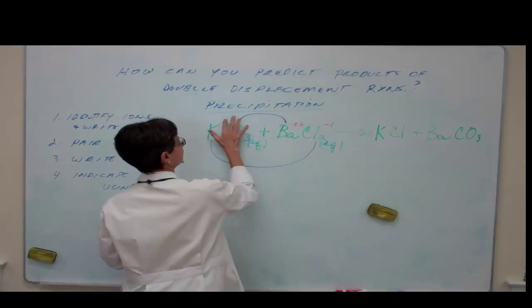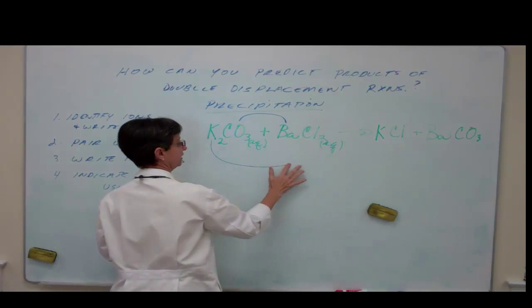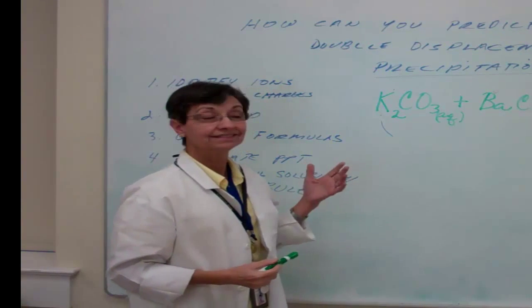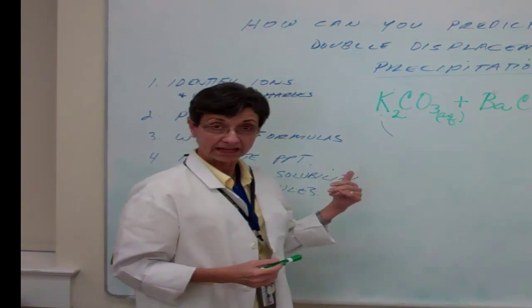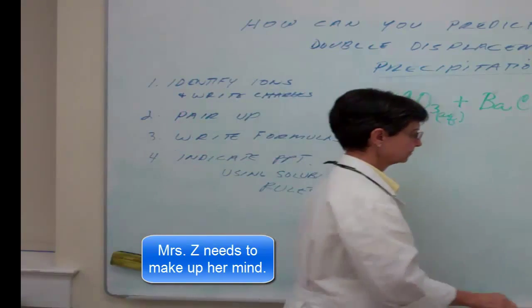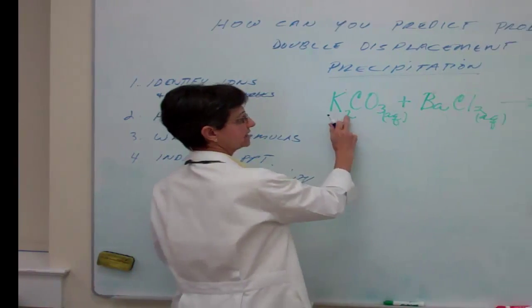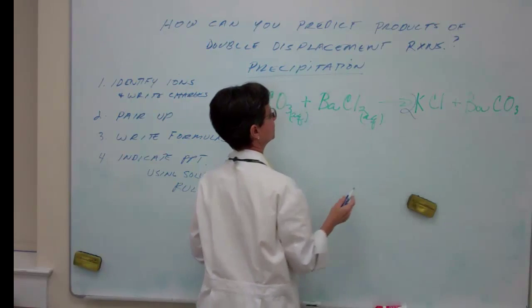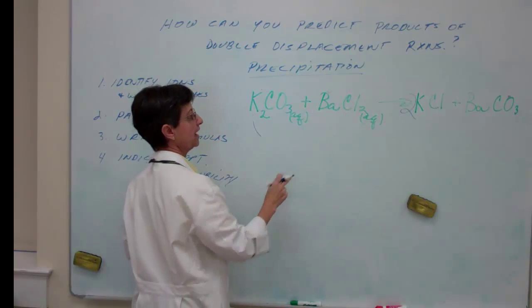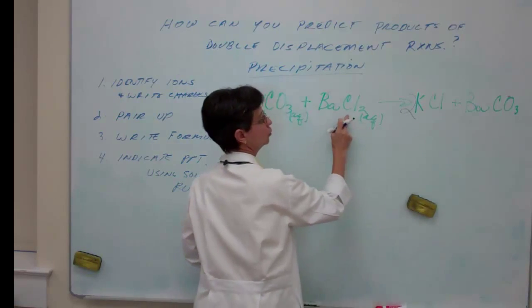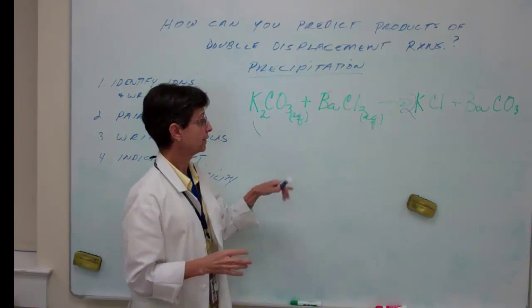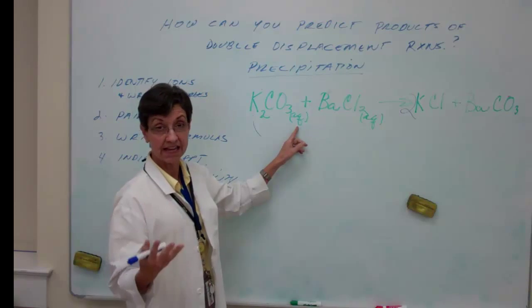Now I'm going to go back and erase these in order not to confuse the issue, and that is your equation. Now it is not balanced but we can go back and balance it. So two potassium, two potassium carbonates, I can use this as a group, one carbonate, one carbonate on the other side, barium, barium, two chlorides, two chlorides. It's all balanced now.